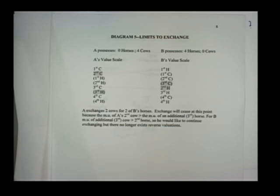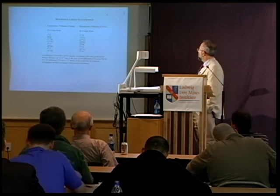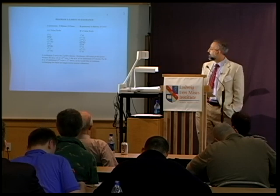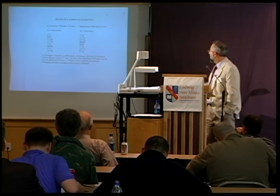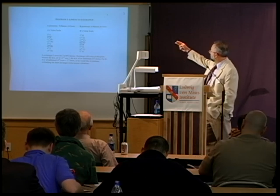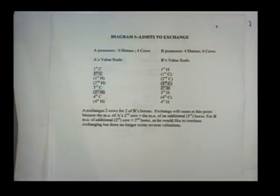Looking at the second exchange: the third cow on A's value scale ranks below the second horse, which he does not yet possess because he hasn't made the second exchange. That second horse is above the third cow, so he makes that exchange also. Now, will he exchange any further? He now has two cows and two horses. If he wanted a third horse, he'd have to give up cow number three, which ranks above the horse. He'd be worse off. So that's where the exchange stops.